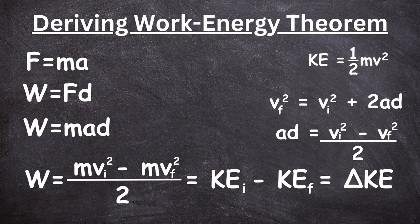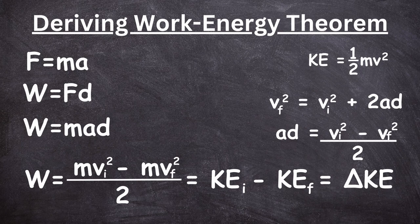Now, 'ad' is something we see in one of our kinematic equations: v final squared equals v initial squared plus 2ad. So we isolate the 'ad' term, then we substitute, and in the end we get that work equals the change in kinetic energy. This means that if a force is applied to a system, the work done will be equal to the change in kinetic energy.